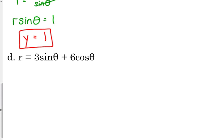One last technique here with part D. r is equal to 3 sine of theta plus 6 cosine of theta. Wouldn't it be great if the sine and the cosine had r's with them? Because then we could just replace them with x's and y's.